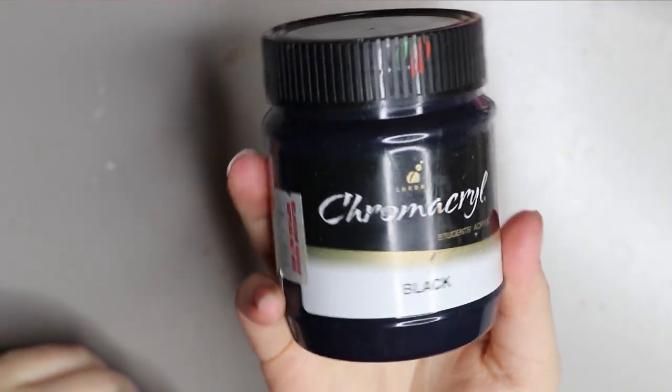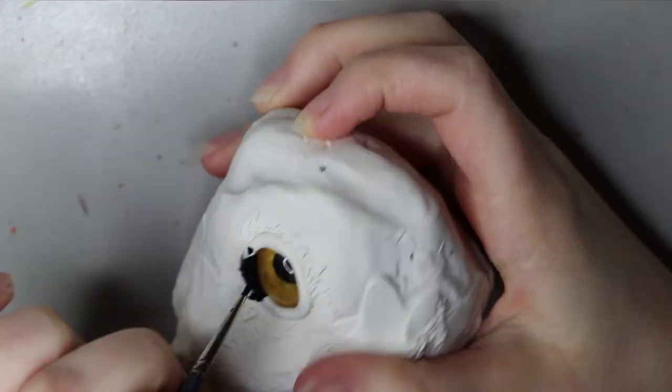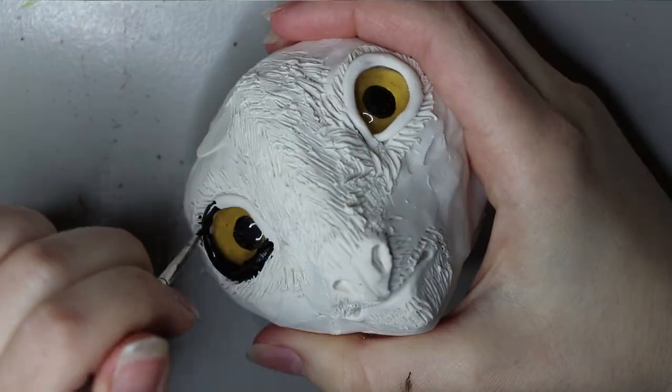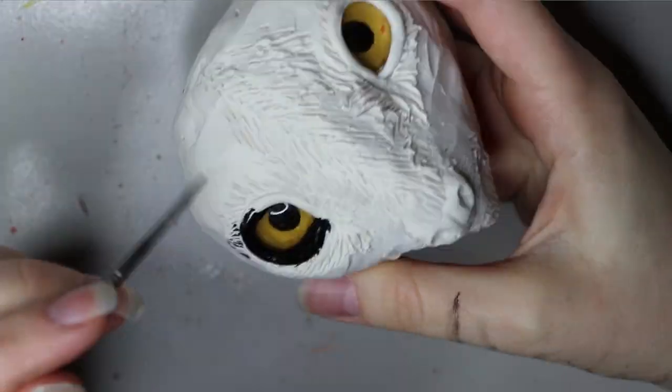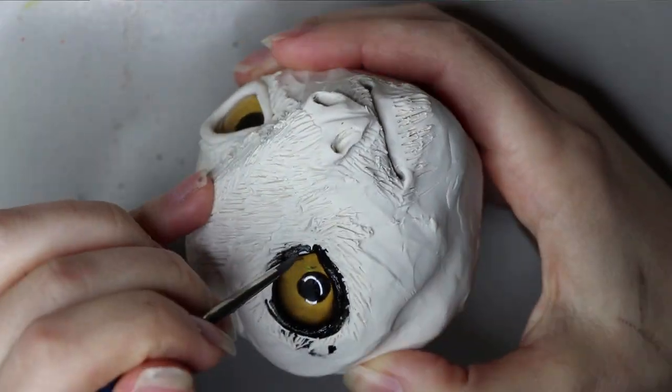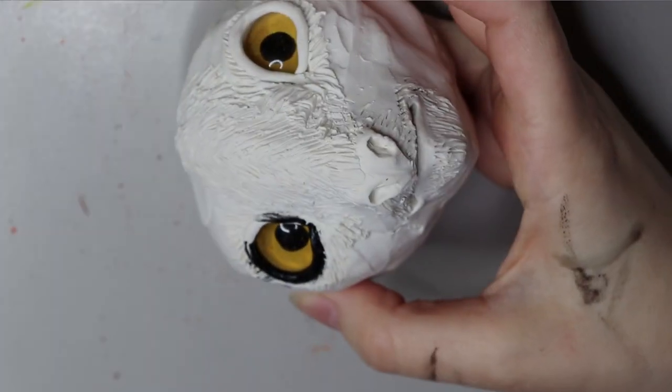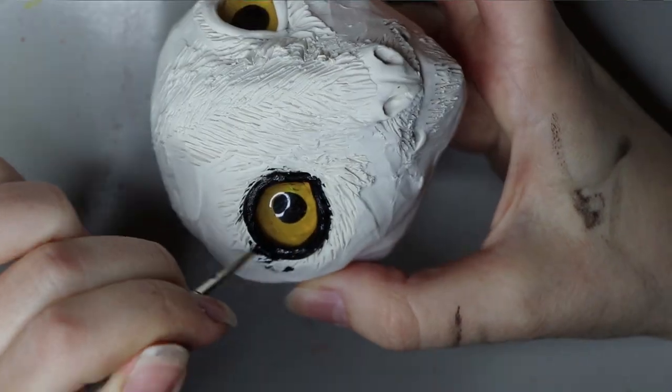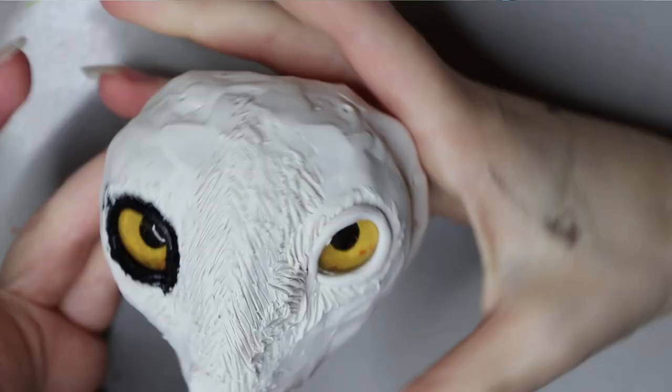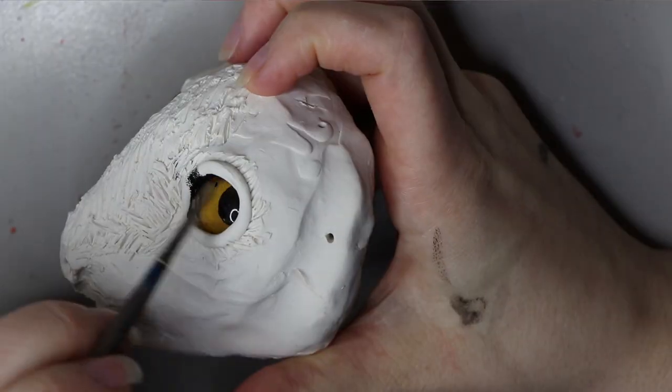Okay, up to the painting. I'm going to go in with my Chroma Cryl black paint and I'm going to paint it around the eyes. The beauty of glass eyes is if you get paint on the eyes, you can just wipe it off with a wet brush. Probably best not to use your hand as a cloth. All right, let's go in and do the second eye.